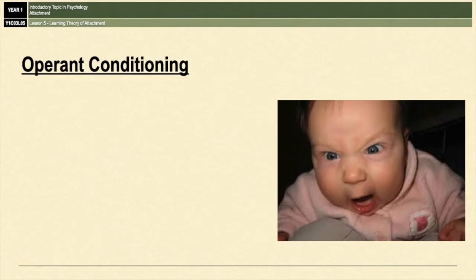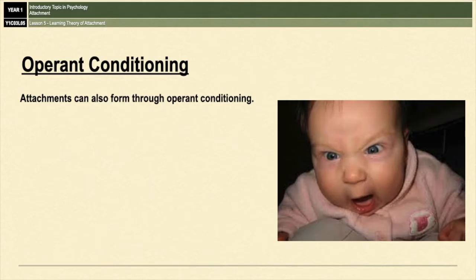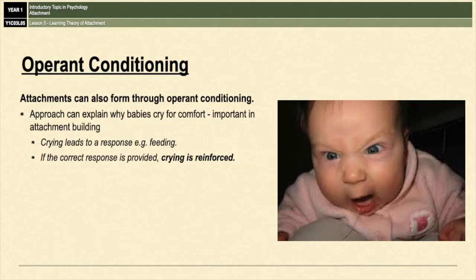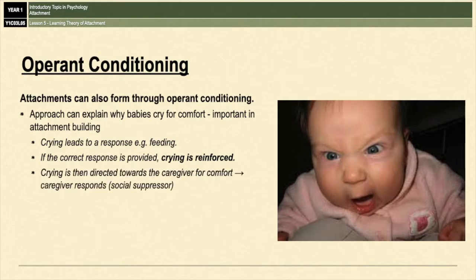Operant conditioning can also explain the development of attachments and attachment behaviors. For example, crying for comfort — a really important behavior in building attachments — can be explained by positive and negative reinforcement. When a baby cries, the caregiver responds usually with feeding, and if the correct response is provided the crying is reinforced, resulting in the baby directing their crying towards that particular caregiver. The caregiver's response is known as a social suppressor, and the baby receives positive reinforcement for crying because it's getting what it wants.